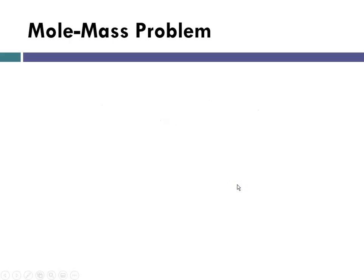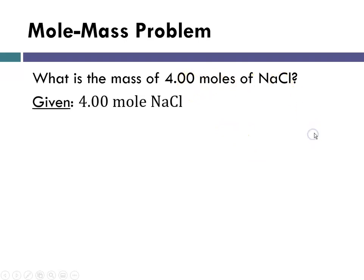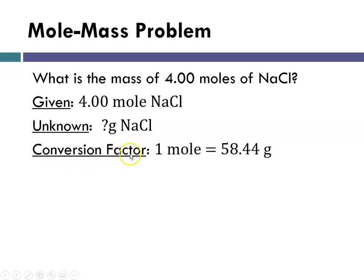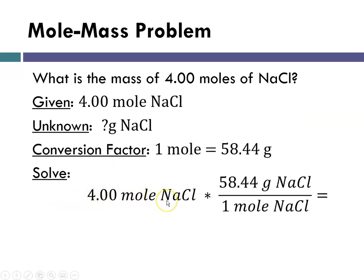So let's look at a mole mass problem. What is the mass of 4.00 moles of sodium chloride? Given 4 moles of sodium chloride, unknown is how many grams of sodium chloride. Conversion factor: 1 mole of sodium chloride is 58.44 grams. We did that a few slides ago. Solve. So we're going to start with our given 4 moles of sodium chloride. This is our molar mass. Remember I said molar mass is going to be like a conversion factor. So we know that we have 58.44 grams of sodium chloride as 1 mole.